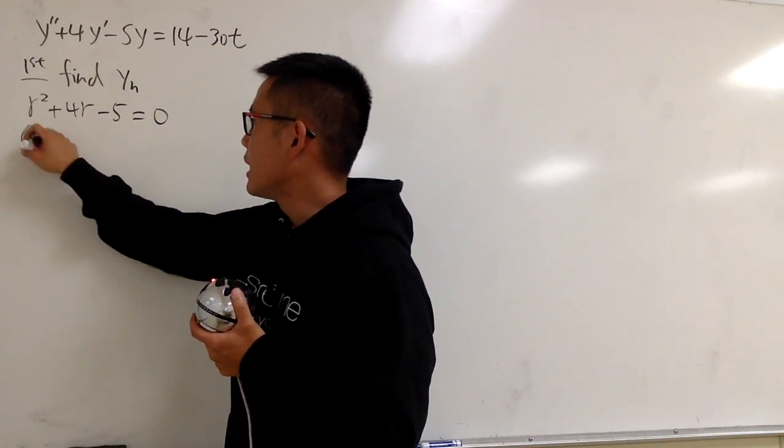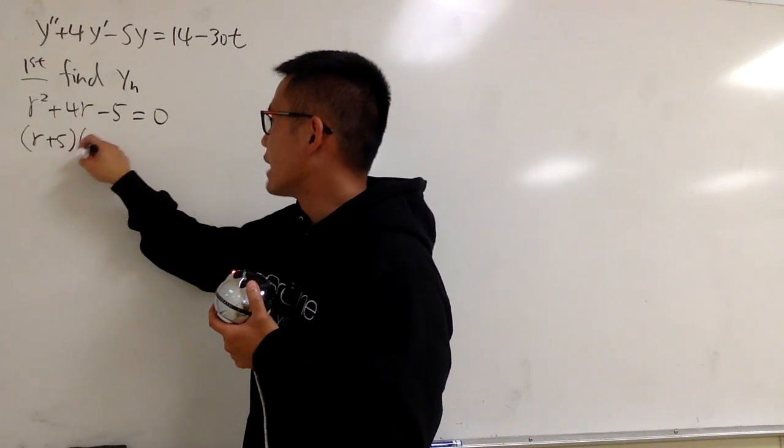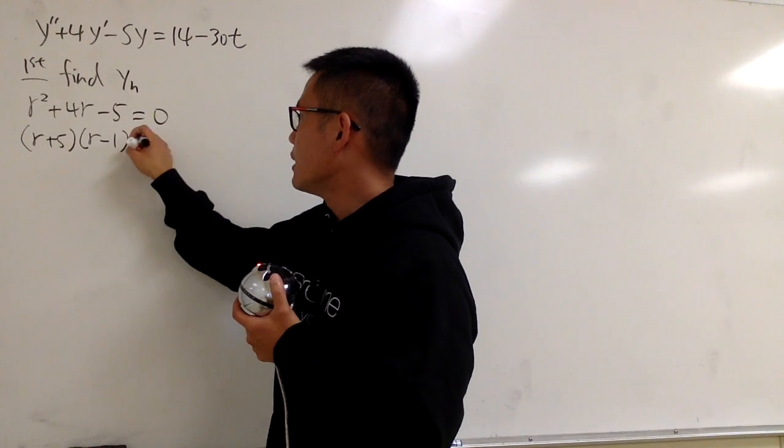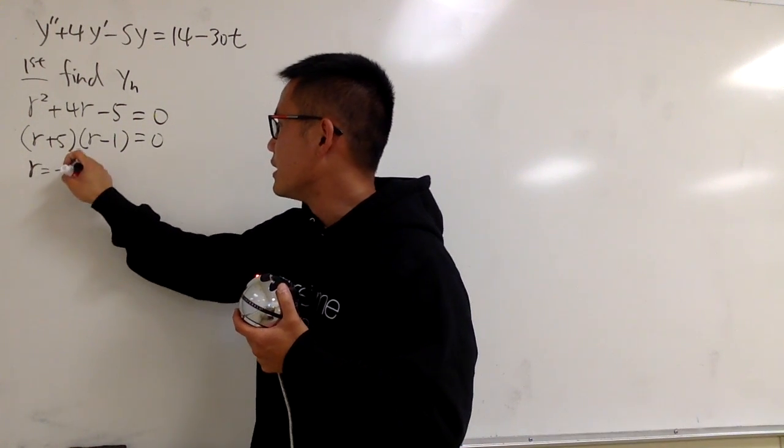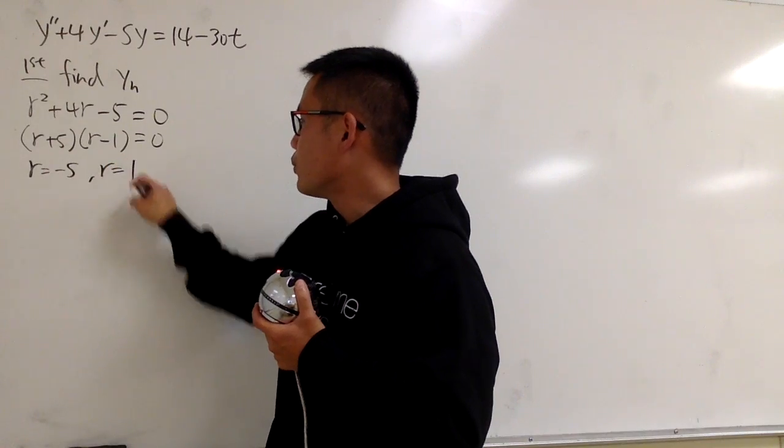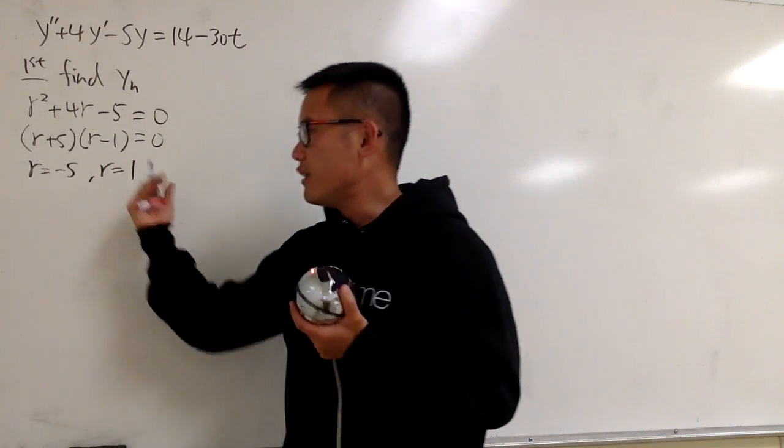So I'll factor this, it becomes r plus 5 times r minus 1, and this will be zero. And you know r will be negative 5, and r is equal to 1. So, two r's, and they're different, so that's good.